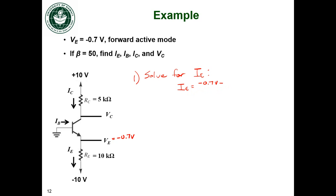Let's subtract the voltage on the other side of the emitter resistor. So minus negative 10 volts and divide that by the value of the emitter resistance, 10 kilo ohms. And this comes out to 0.93 milliamps.